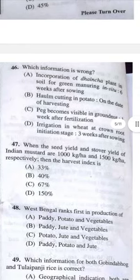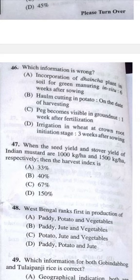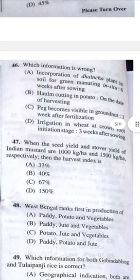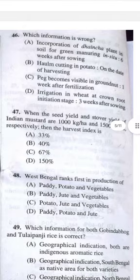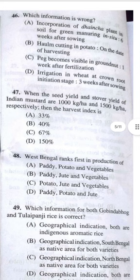Question 46: Which information is wrong? Answer C — peg becomes visible in groundnut one week after fertilization; that is wrong. Question 47: When seed yield is 1000 kg per hectare and stubble yield is 1500 kg per hectare, the harvest index — seed yield divided by total biological yield. Answer B, 40 percent.